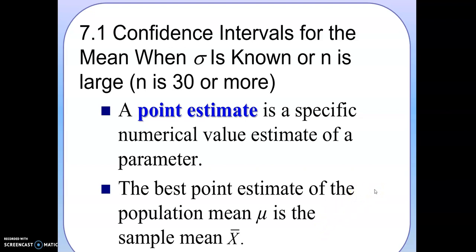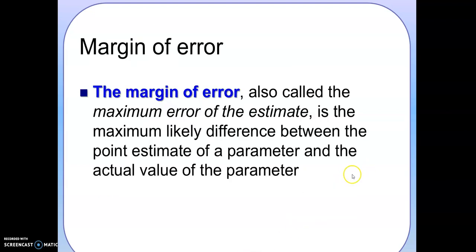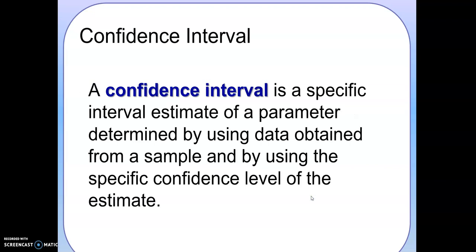The first thing we need to find is a point estimate. A best point estimate for this type of question is using the sample mean, which is x bar. The margin error is the maximum likely difference between the point estimate of the parameter and the actual value of the parameter. The confidence interval is a specific interval estimate of a parameter determined by using data obtained from a sample and by using the specific confidence level of the estimate.